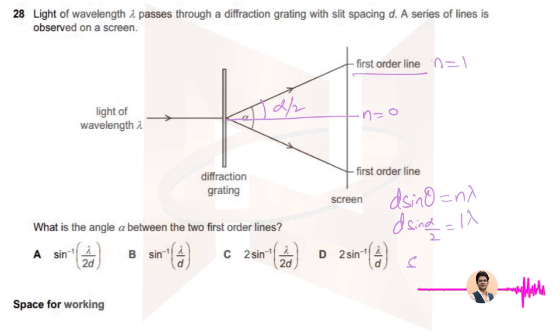So sine alpha by 2 should be lambda by d, and then you basically do sine inverse. So alpha by 2 should be sine inverse of lambda by d.